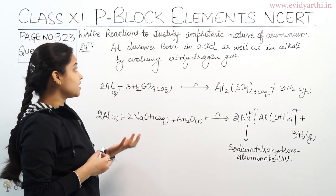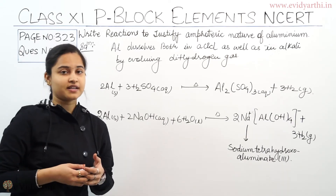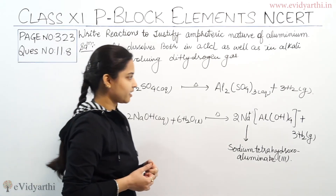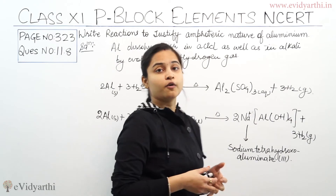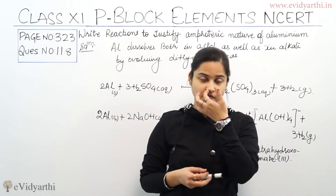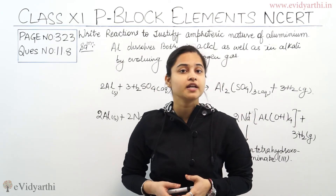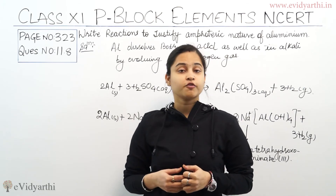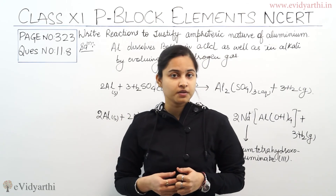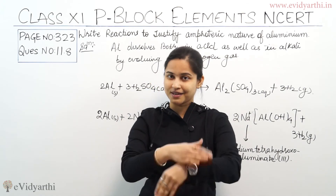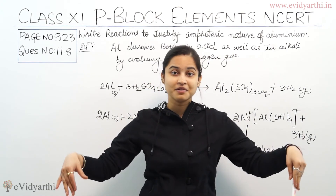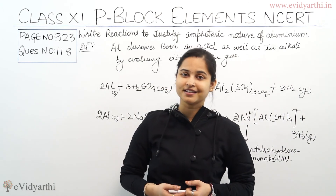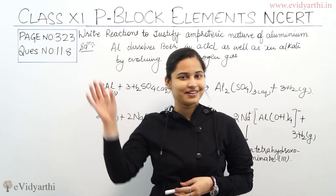Aluminium dissolves both in acid as well as in alkali, evolving dihydrogen gas. I hope the reactions are very much clear to you all. If you have any doubt regarding the justification for the amphoteric nature of aluminium, please ask in the comment section below. This brings me to the end of the session — goodbye to you all.